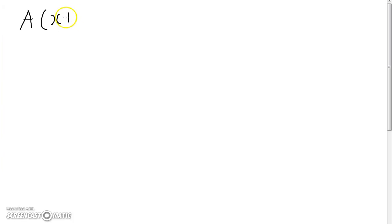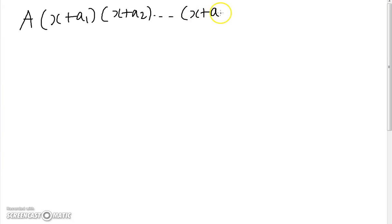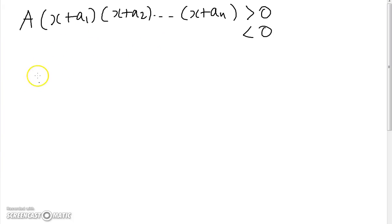In this video we're going to be talking about polynomial inequalities — those are inequalities of the form a, where a is a constant multiplied by (x + a1) multiplied by (x + a2), perhaps all the way to (x + a_n), is greater than 0 or less than 0. Because these inequalities are quite nice, there are general ways of solving them.